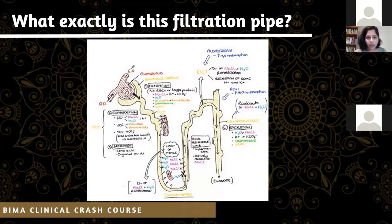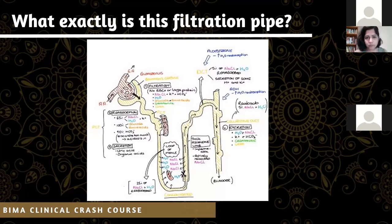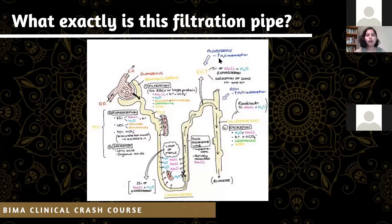We then go through the loop of Henle — the descending and ascending loop — where we reabsorb more sodium chloride and water, really concentrating the first step of urine. Then we go to the distal convoluted tubule, where aldosterone, produced in the adrenal cortex, reabsorbs more water. We're continuing to concentrate our urine.